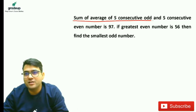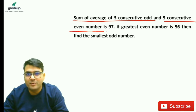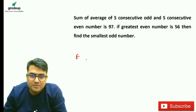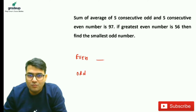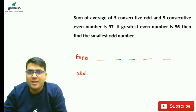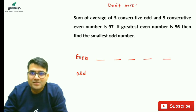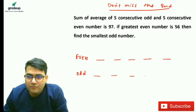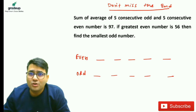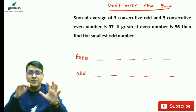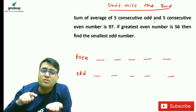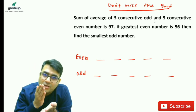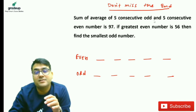The sum of averages of 5 consecutive odd and 5 consecutive even numbers is 97. We have 5 consecutive even numbers and 5 consecutive odd numbers. The sum of the average of 5 consecutive even and 5 consecutive odd numbers is 97.